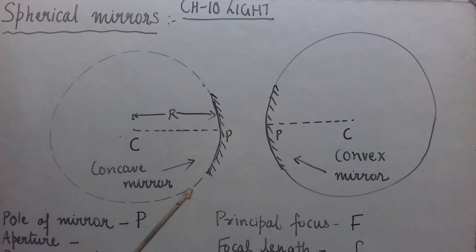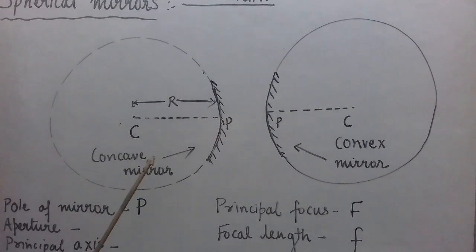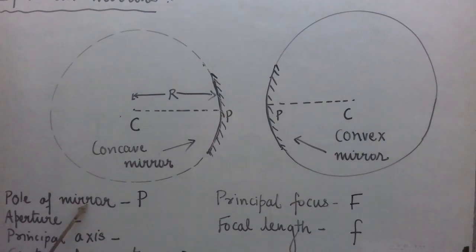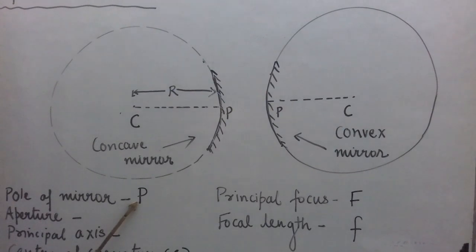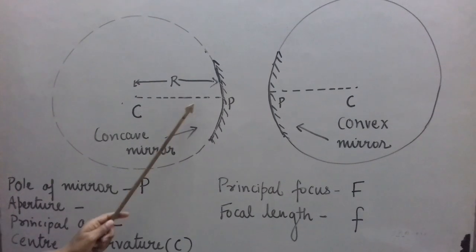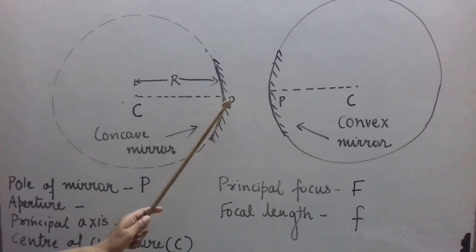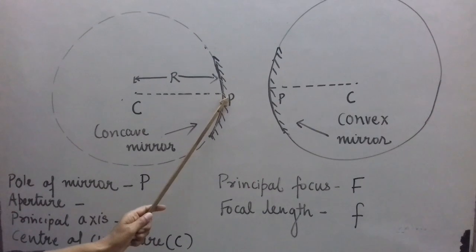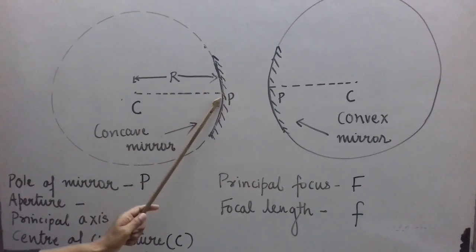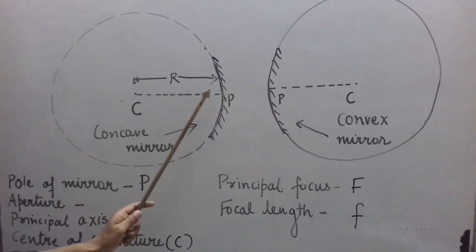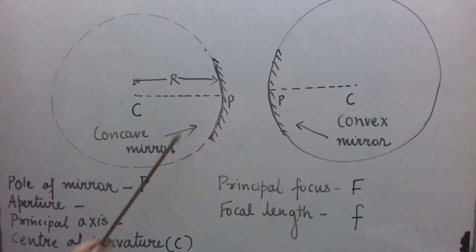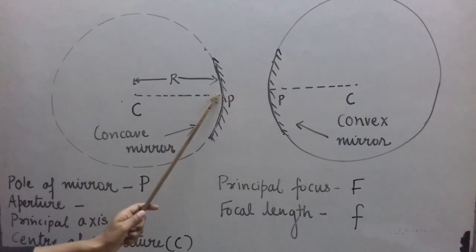Now let us see a few terms related to spherical mirrors. One is the pole of the mirror, which is generally represented by P. P is the geometrical centre of the reflecting surface of the mirror. The geometrical centre of the reflecting surface is called its pole, represented by the letter capital P.